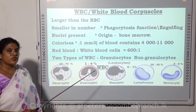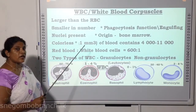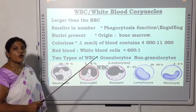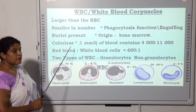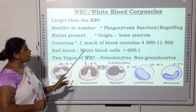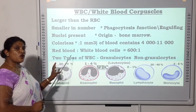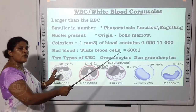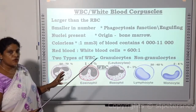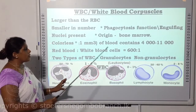Now we will see the features of WBCs or white blood cells. WBCs are larger than RBCs but smaller in number. Their function is engulfing bacteria, or phagocytosis. A nucleus is present. Origin is bone marrow, and they are colorless. One cubic millimeter of blood contains 4,000 to 11,000 WBCs. The ratio of RBCs to WBCs is approximately 600:1. There are two types of WBCs: granulocytes and agranulocytes.